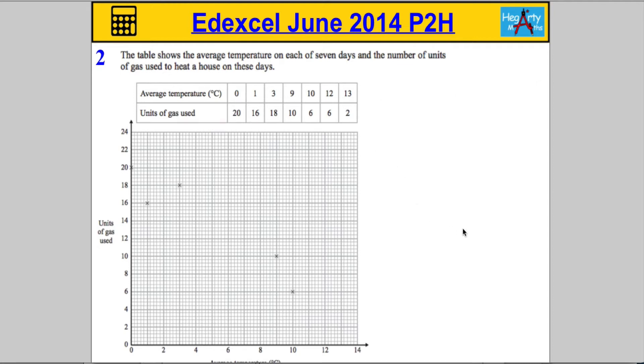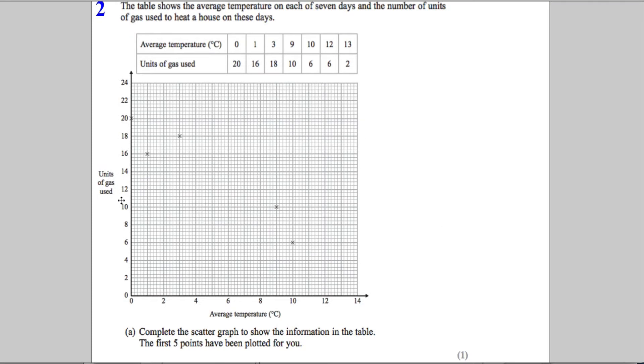We've got a table and below we can see a grid with some points plotted on it. We're asked in part A to complete the scatter graph to show the information in the table. The first five points have been plotted for you, so we need to plot these last two sets of coordinates onto our scatter graph.